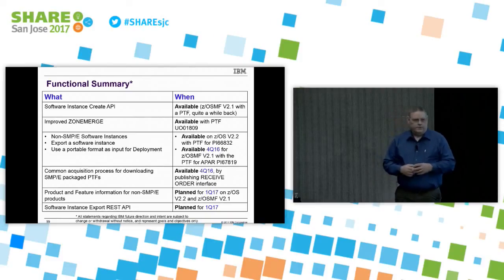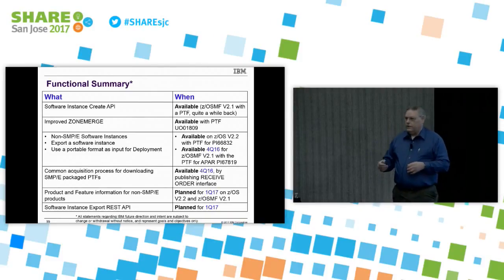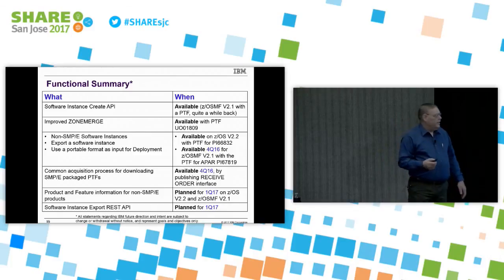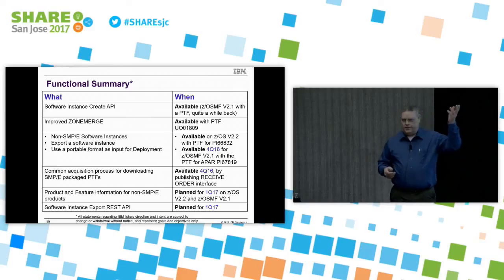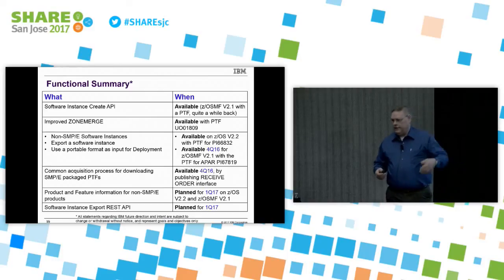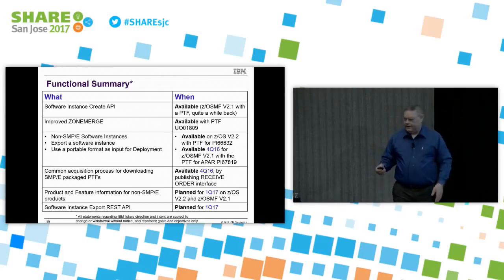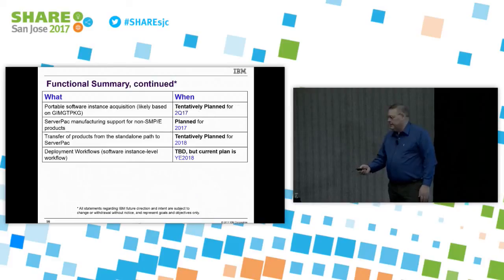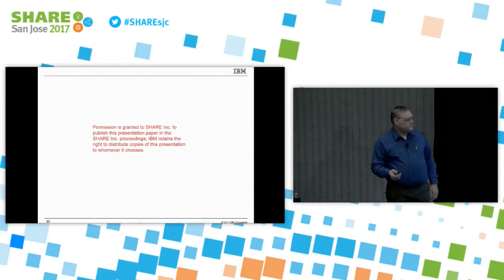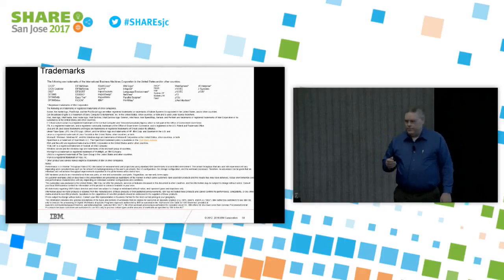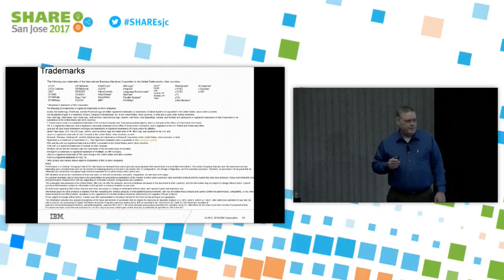So here's a quick functional summary — I'm not really going to go through this, it's available in the charts you can download. If you haven't downloaded them yet and you wait a little while, I'll upload a set that's missing the typo — the typo's not important, it doesn't change any of the content, but at least I fixed it in time for the webcast. And as always, there'll be a quiz. To leave the room, you need to score 70 or better on the trademarks chart.